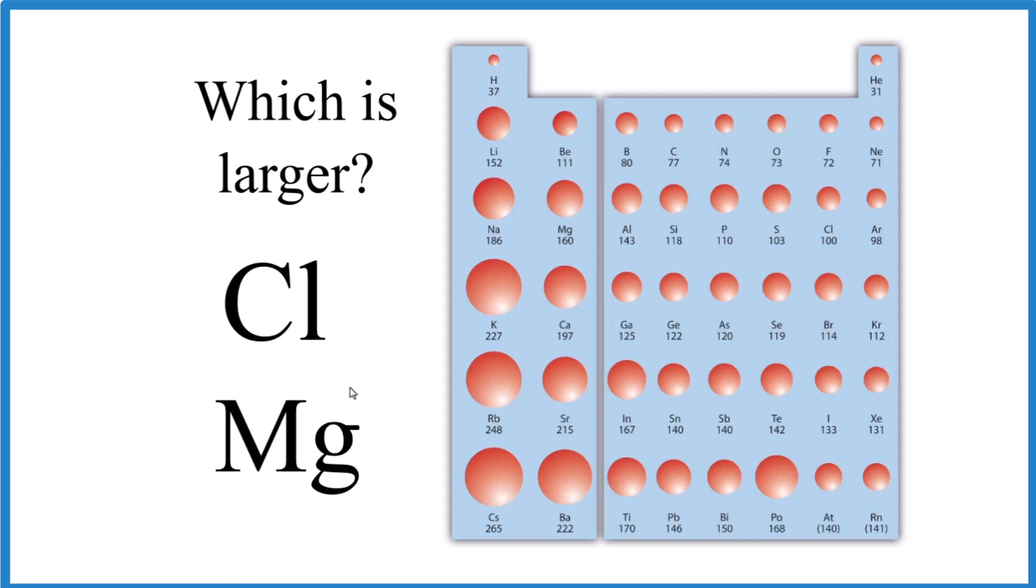Let's find these on the periodic table. This periodic table is abbreviated. We took out the transition metals, but they follow the same general trend. Chlorine is right here and magnesium right here. They're in the same period on the periodic table.